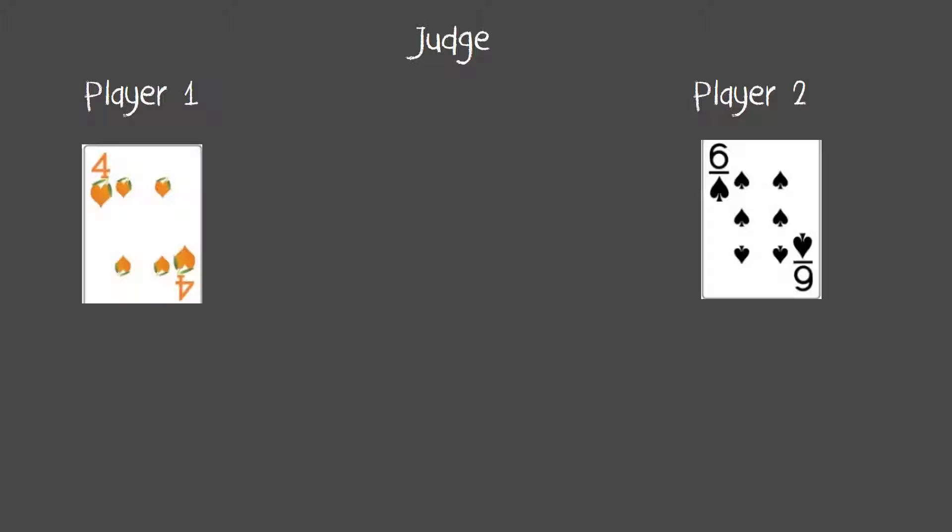To start this activity we're going to need a judge and player one and player two, so three players. What we're going to do is work on least common multiple to begin with and we're going to play this game similar to the game war in which the players will be dealt two cards face up and they will look at the two cards and then determine what is the least common multiple of those two cards.